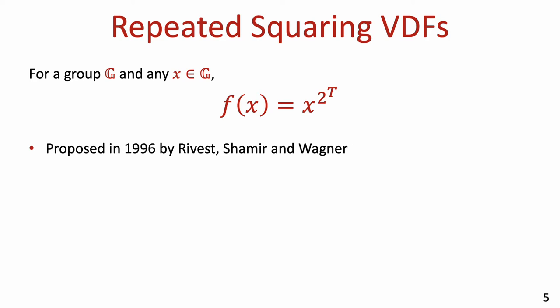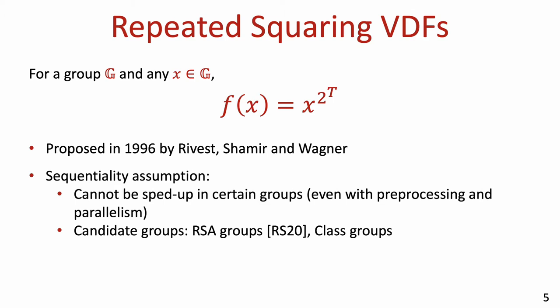The main candidates that we currently have for VDFs are based on the repeated squaring delay function put forth by Rivest, Shamir, and Wagner back in 1996. This function is defined with respect to a cryptographic group G, and on input x, the output is x raised to the power of 2 to the t. The fact that this is indeed a delay function is based on the assumption that there are groups in which this computation cannot be significantly sped up, even with preprocessing and a polynomial number of parallel processors. It's not hard to see that for this assumption to be plausible in some group, it should be hard to compute the group's order from its representation.